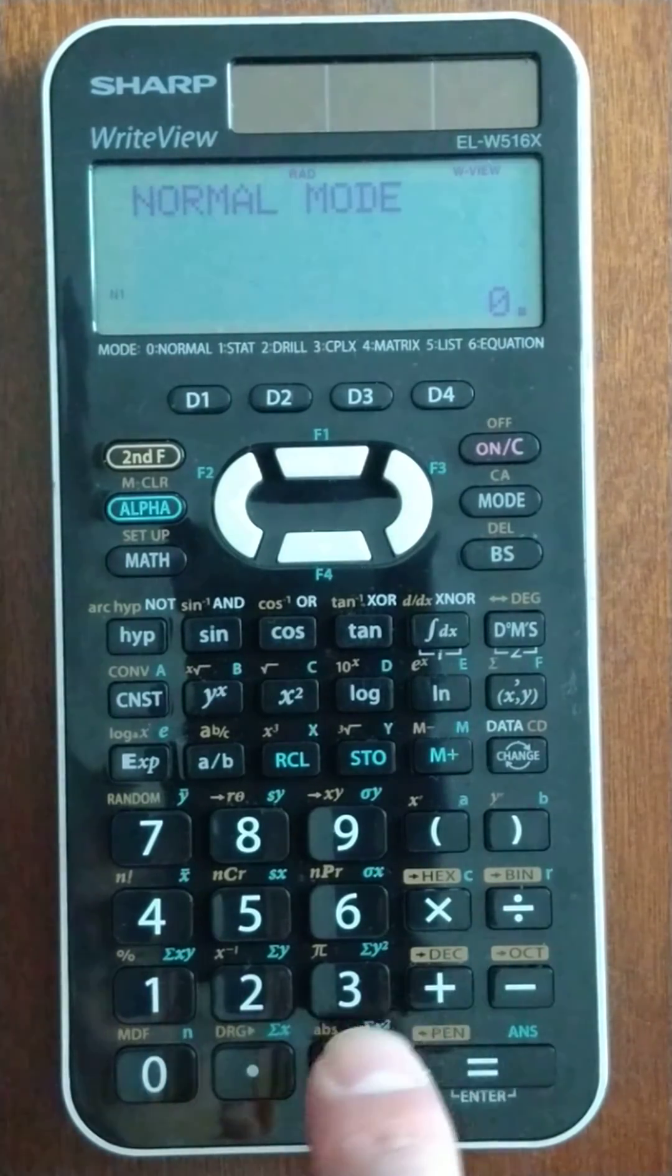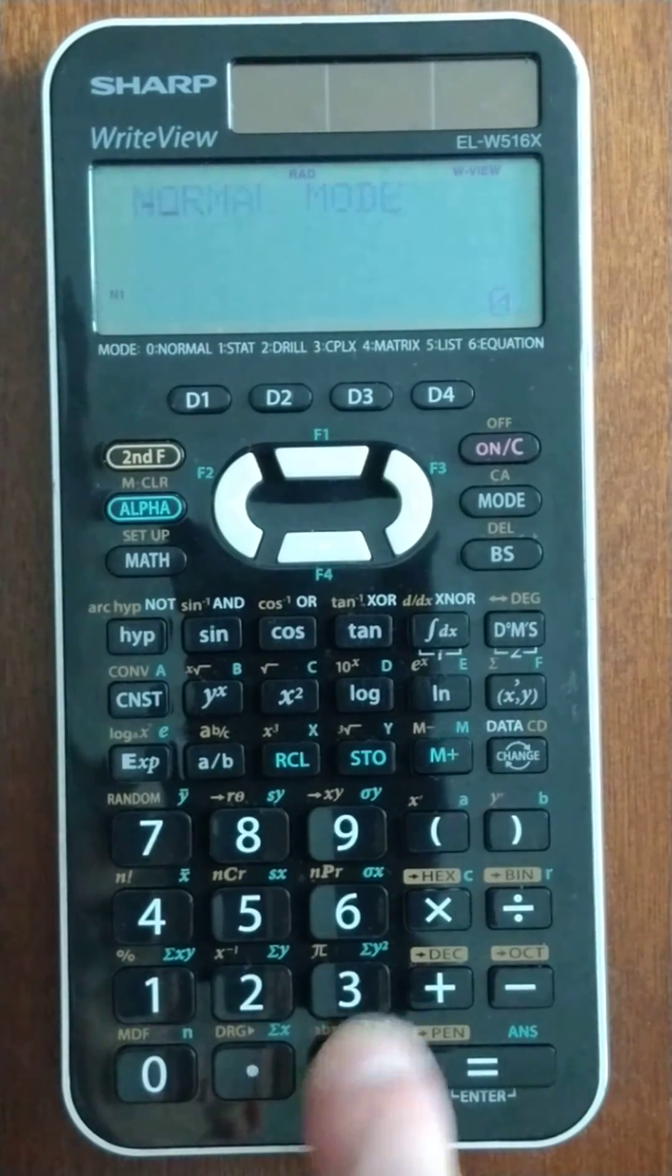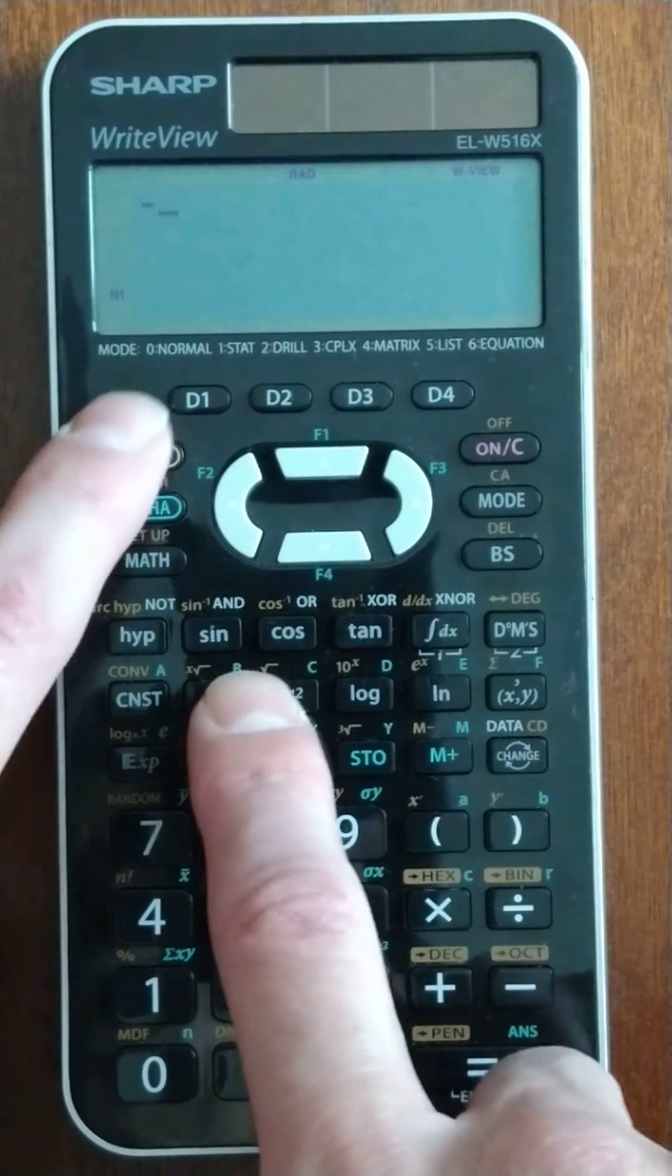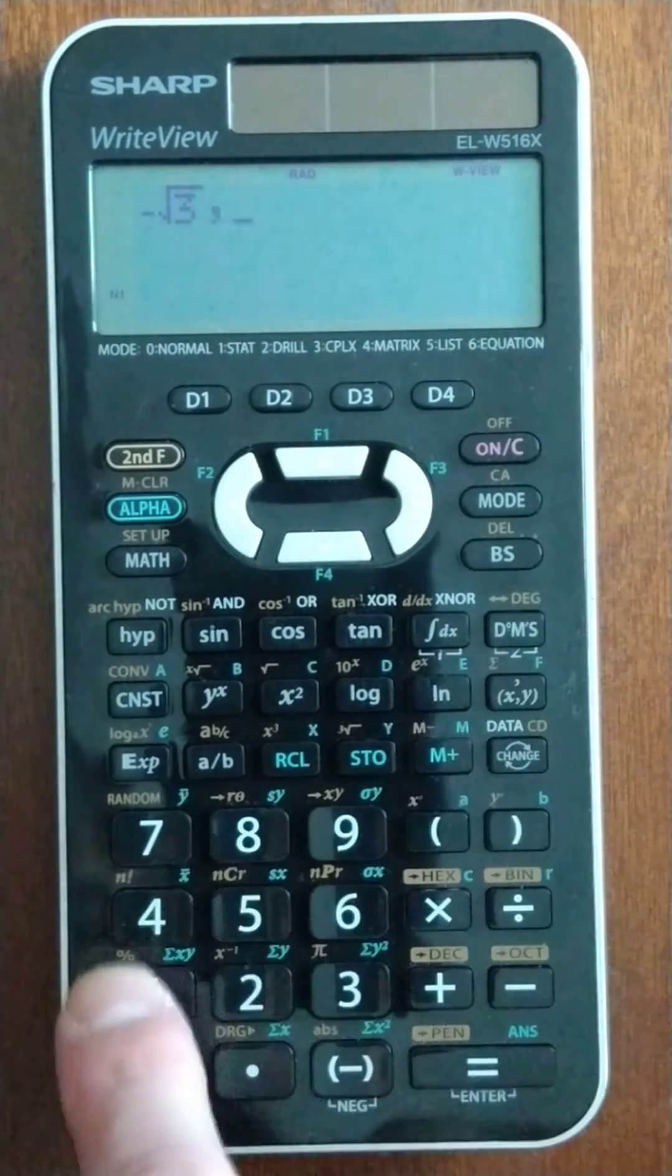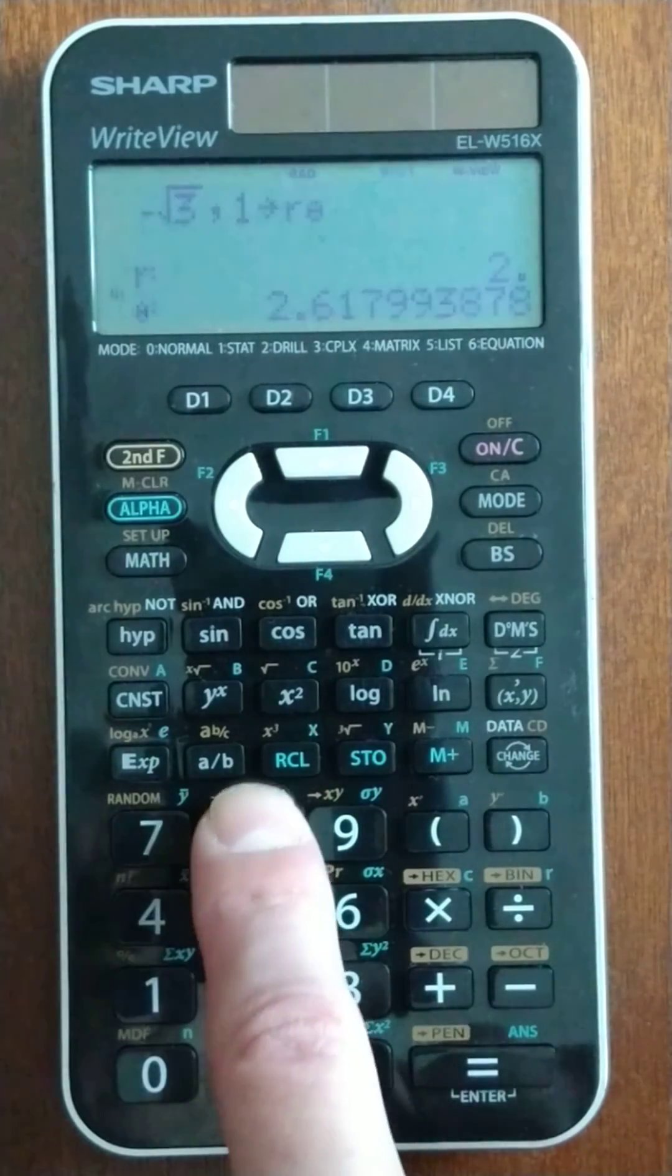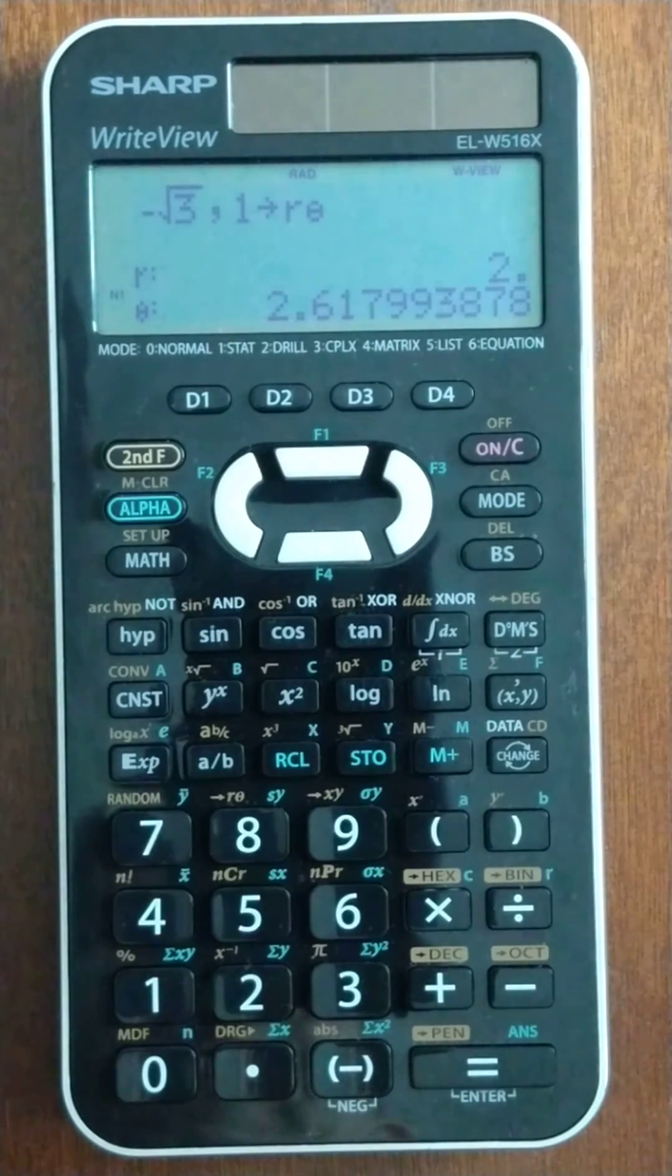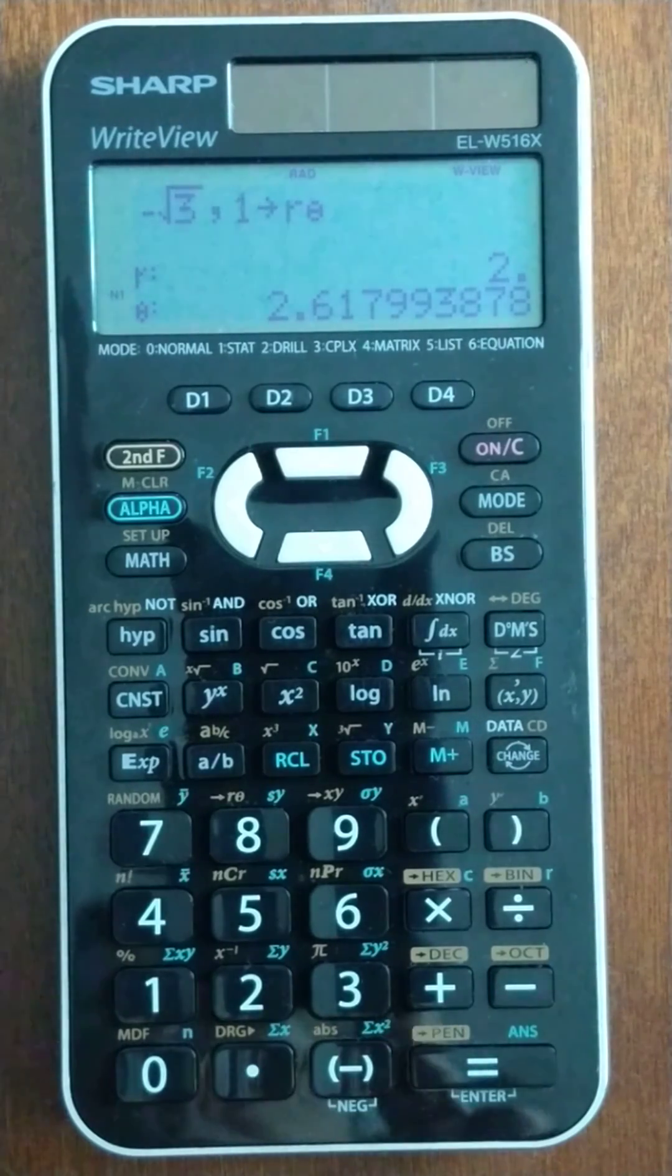And let's do the other way around. We're going to go from negative square root of 3, comma, 1. And we want to convert that to polar. So, we just do shift and hit this button. And it says 2 at an angle of 2.62 radians. It's really quick. I actually like the sharp on this. So, I'm going to call this a tie between all three.